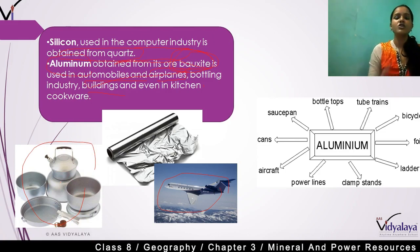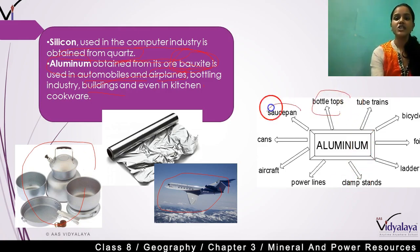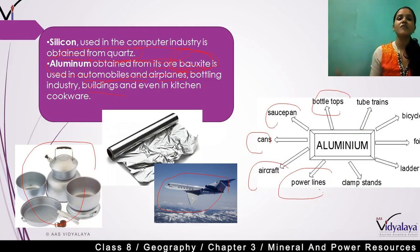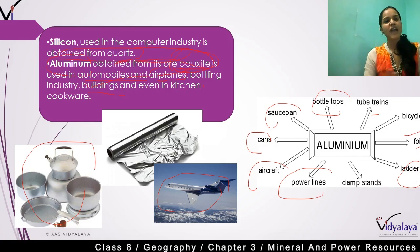The basic form of a mineral is extracted, then refined into a usable form for different objects. For aluminum, examples include bottle tops, saucepans, cans, aircraft, power lines, bicycles, tube trains, foil, and ladders.